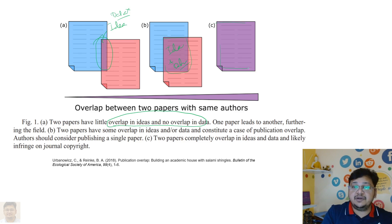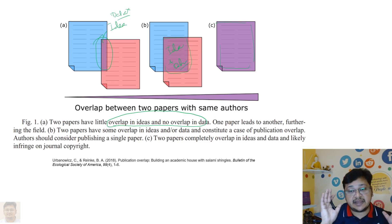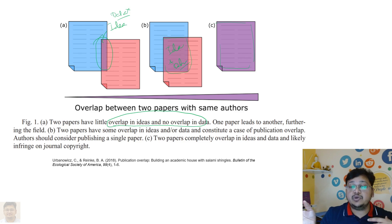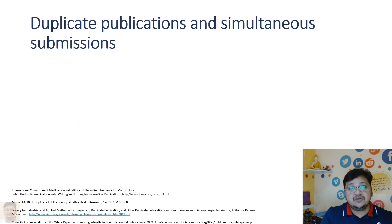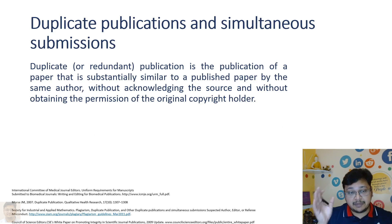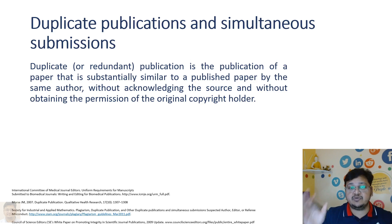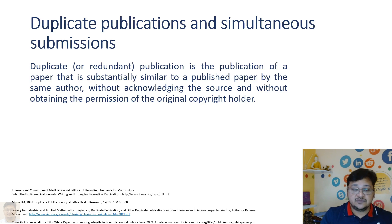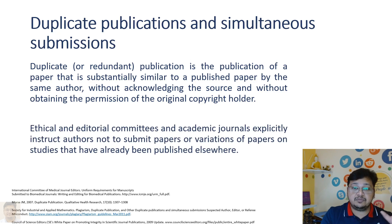In that second case, they have to avoid publishing one of them. The third category is completely 100% overlap — in this case it has to be avoided because it violates copyright, and if published it would count as duplicate publication. Duplicate publication is the publication of a paper substantially similar to an already published article by the same author, without acknowledging the source and without obtaining permission from the original copyright holder.